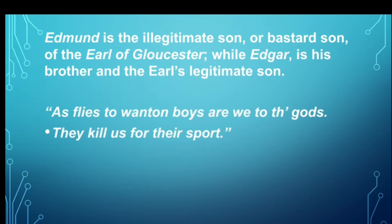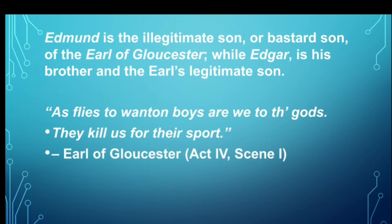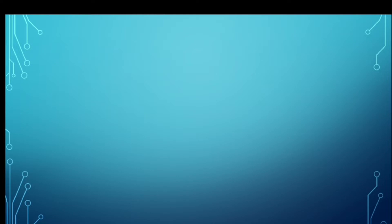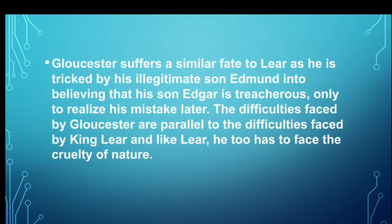Here is an important quotation: 'As flies to wanton boys, are we to the gods? They kill us for their sport.' — Gloucester says this in Act 4, Scene 1. Gloucester suffers a similar fate to Lear, as he is tricked by his illegitimate son Edmund into believing that his son Edgar is treacherous, only to realize his mistake later. The difficulties faced by Gloucester are parallel to the difficulties faced by Lear.